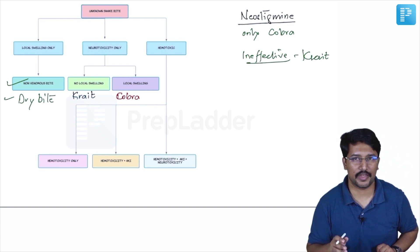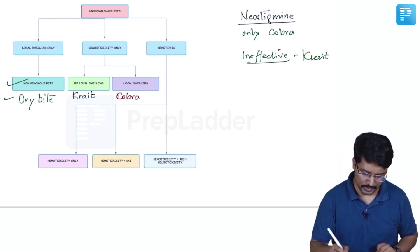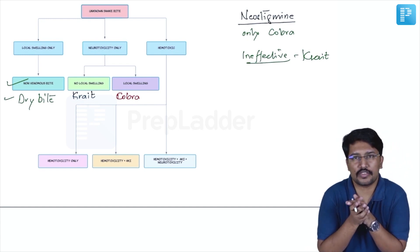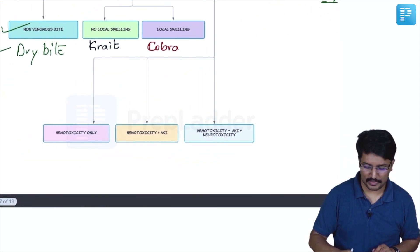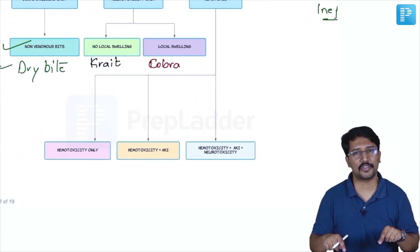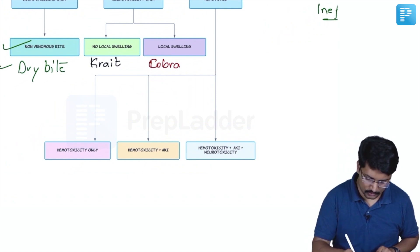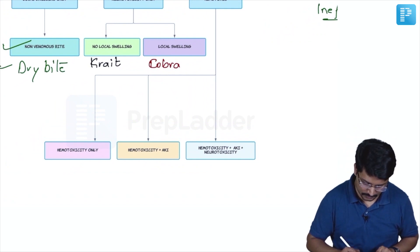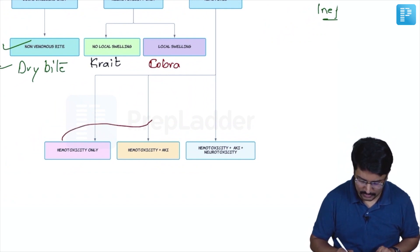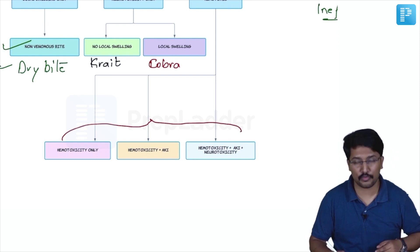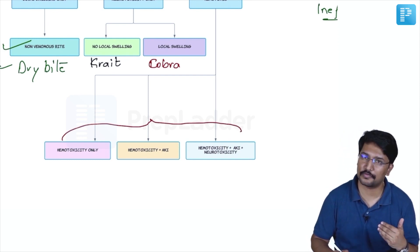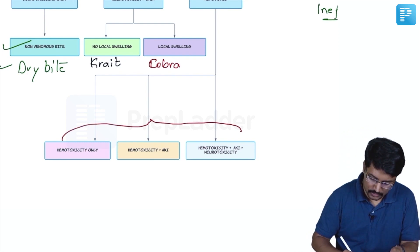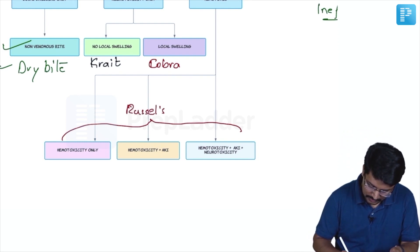When it comes to hemotoxic bites, Russell's Viper is the commonest hemotoxic bite. It can cause the entire spectrum: only hemotoxic manifestations, hemotoxicity with AKI, or hemotoxicity with AKI plus neurotoxicity plus musculotoxicity. This entire spectrum is possible with Russell's Viper.